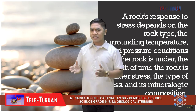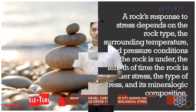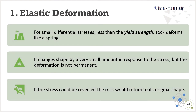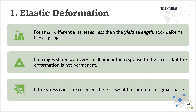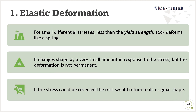When rock is stressed, it goes through a series of changes. The first change is elastic deformation. For small differential stresses, less than the yield stress, rock deforms like a spring. It changes shape by a very small amount in response to the stress, but the deformation is not permanent. If the stress is reversed, the rock would return to its original shape.